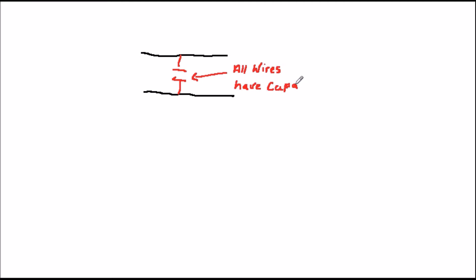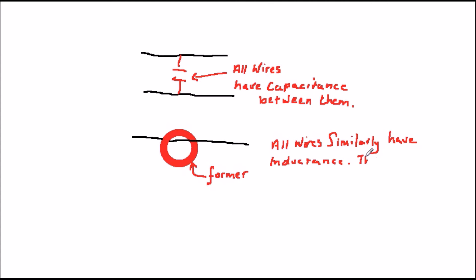However, in reality, any two wires have a capacitance between them, even if it's very small, because they act like the two plates of a capacitor. Wires also obviously have a resistance, and perhaps less obviously have an inductance, because each wire is like a single turn of an inductor.